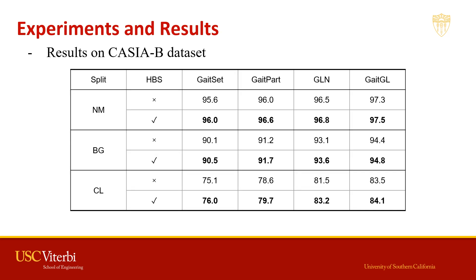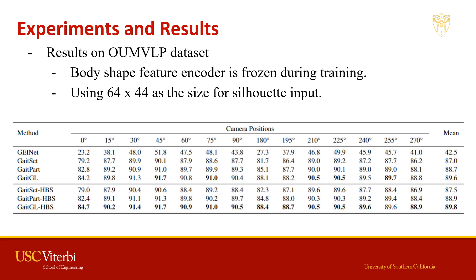We first present our results on CASIA-B, where we apply our method with each baseline method on three different splits. With knowledge prior from the 3D body shapes, our methods show consistent improvement compared with the baseline methods. We also present results on OUMVLP with different camera viewpoints. Since OUMVLP does not provide RGB images, we freeze the body shape encoder in the silhouette branch after pre-training with limited RGB images from CASIA-B, and our method still shows consistent improvement.